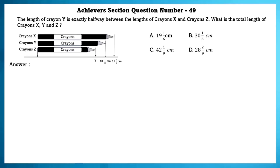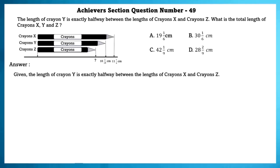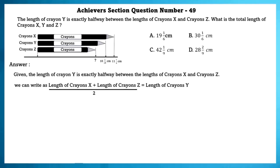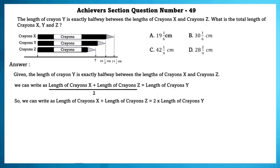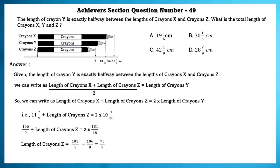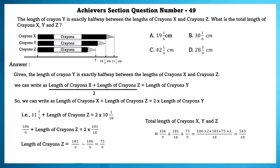Achieve section question number 49. The length of crayon Y is exactly halfway between the lengths of crayon X and crayon Z. What is the total length of crayon X, Y and Z? Length of crayon Z plus length of crayon X by 2 equals length of crayon Y, which means length of crayon X plus length of crayon Z equals 2 into length of crayon Y equals 11 and 7 by 9 plus Z equals 2 into 10 and 1 by 18. Solving, crayon Z is 75 by 9, and the total length is 543 by 18, simplified to 31 by 6 centimetres.